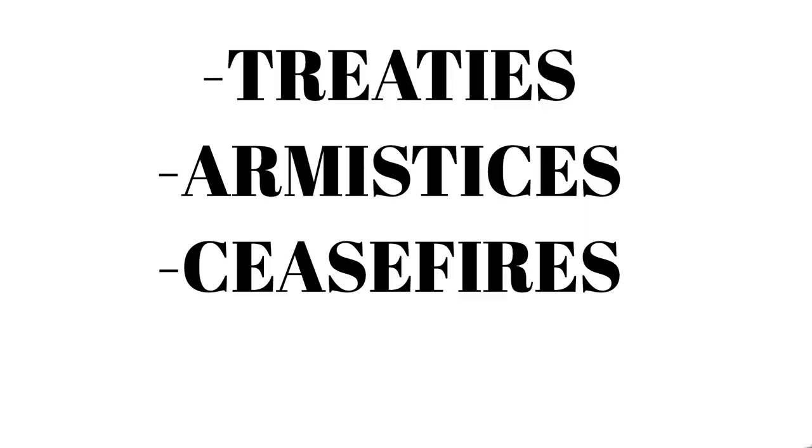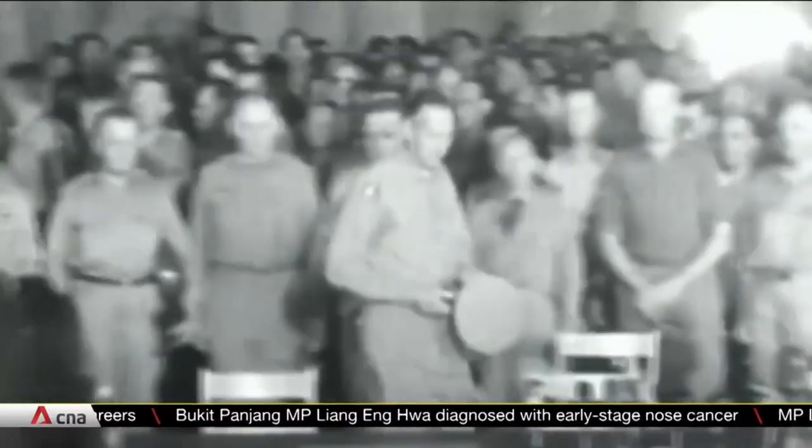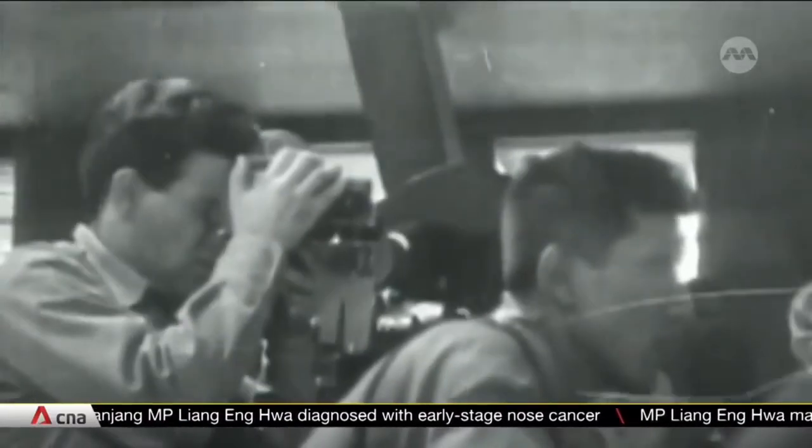Let us talk about the methods of war termination. When it comes to ending wars, different methods are employed based on the context and the parties involved. Treaties, armistices, and ceasefires are some of the common methods. Take the Treaty of Versailles after World War I, or the Korean Armistice Agreement that halted the Korean War. These are examples of how legal agreements have been used to put an end to hostilities. It was the longest negotiated armistice in history.